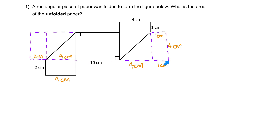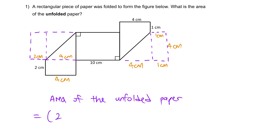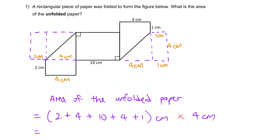We have the breadth, which is 4 cm. Therefore, the area of the unfolded paper equals the length — that would be 2 plus 4 plus 10 plus 4 plus 1 cm — multiplied by the breadth. That gives us 21 cm times 4 cm, which equals 84 cm squared.